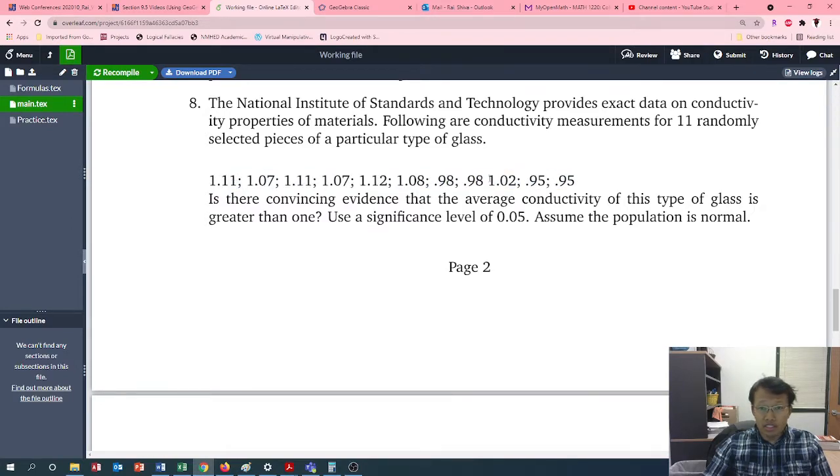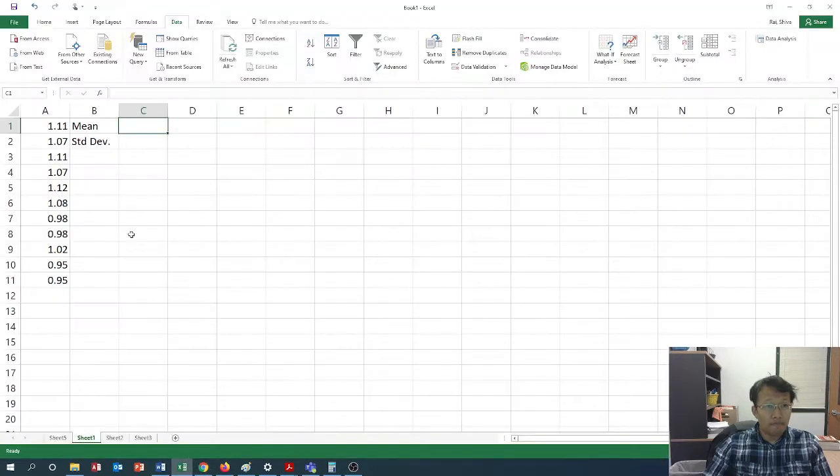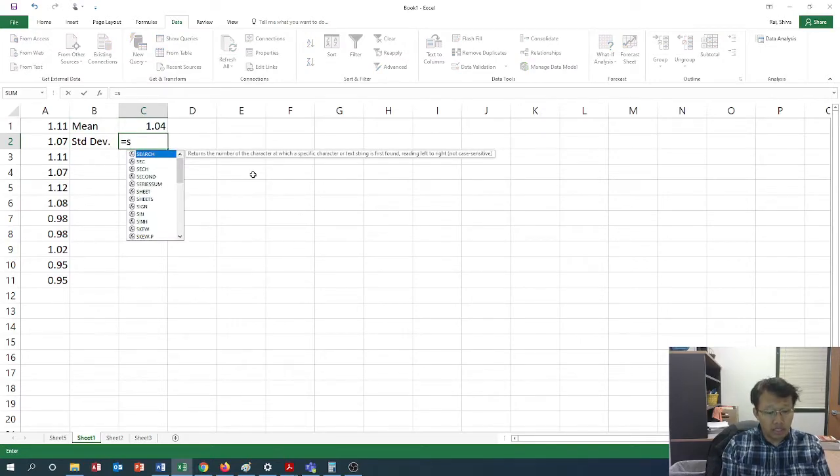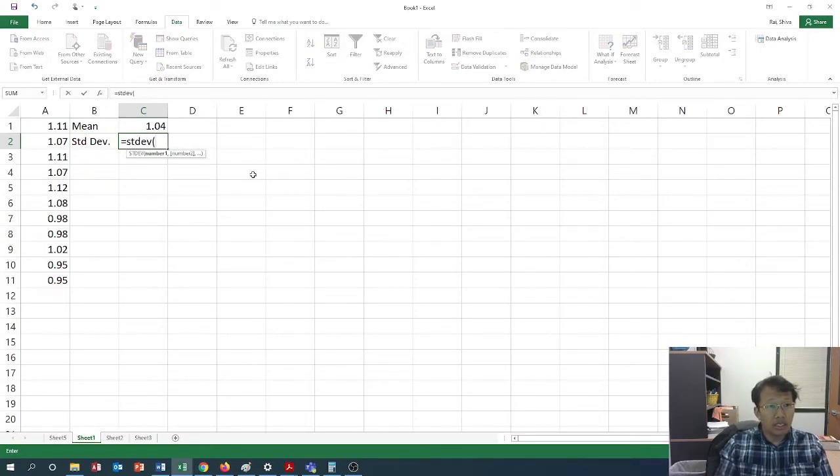So just list this data in Microsoft Excel, okay, do that and find out the mean. So mean is 1.04, so let me write that down. Standard deviation, we know the formula equals to STDEV and the array, the data set, 0.06588. Okay, so that looks fine.